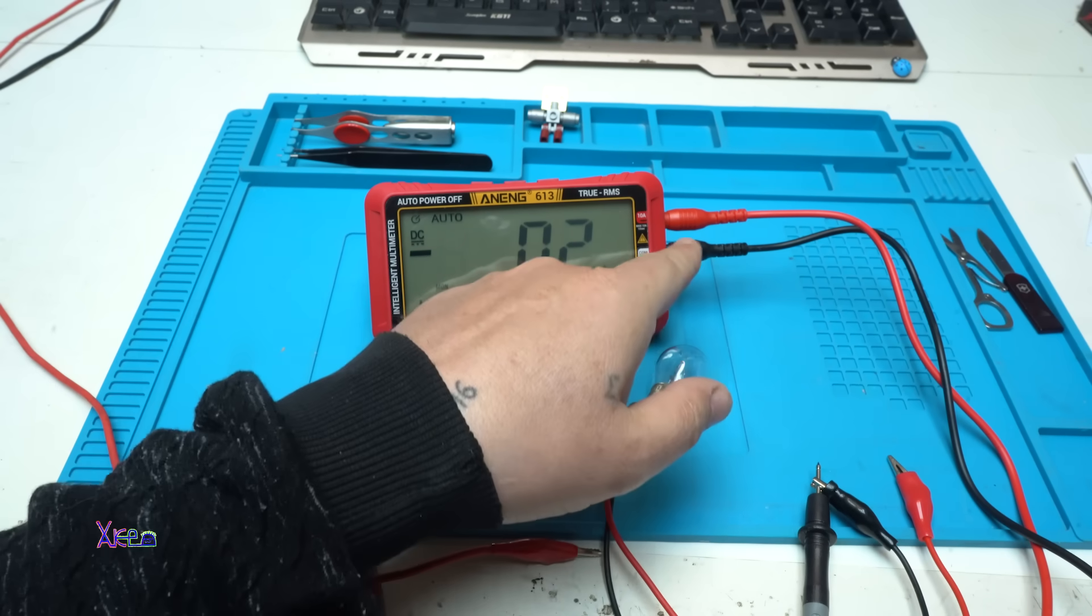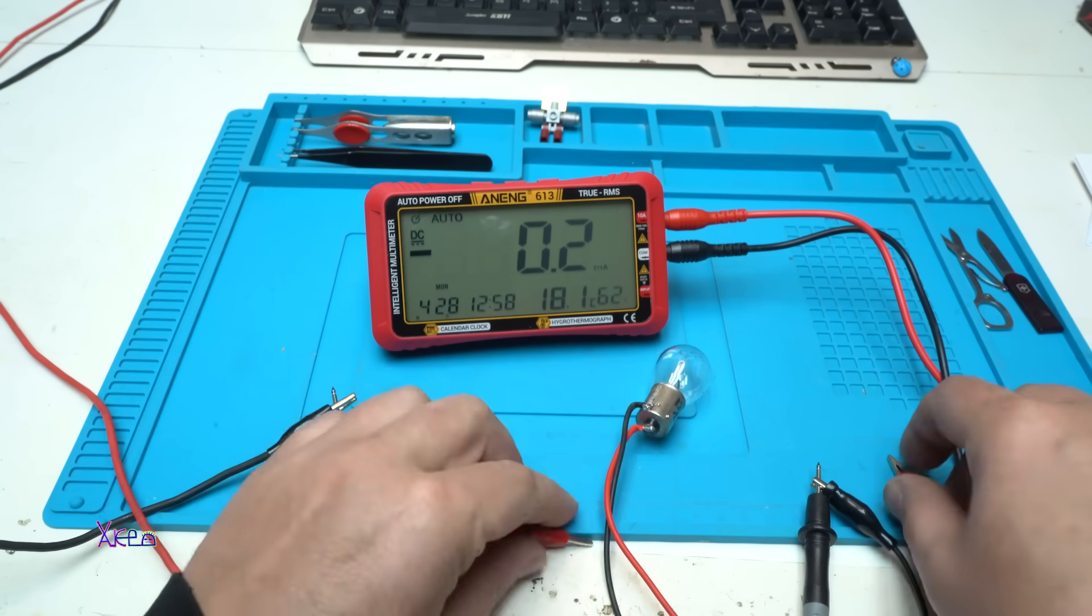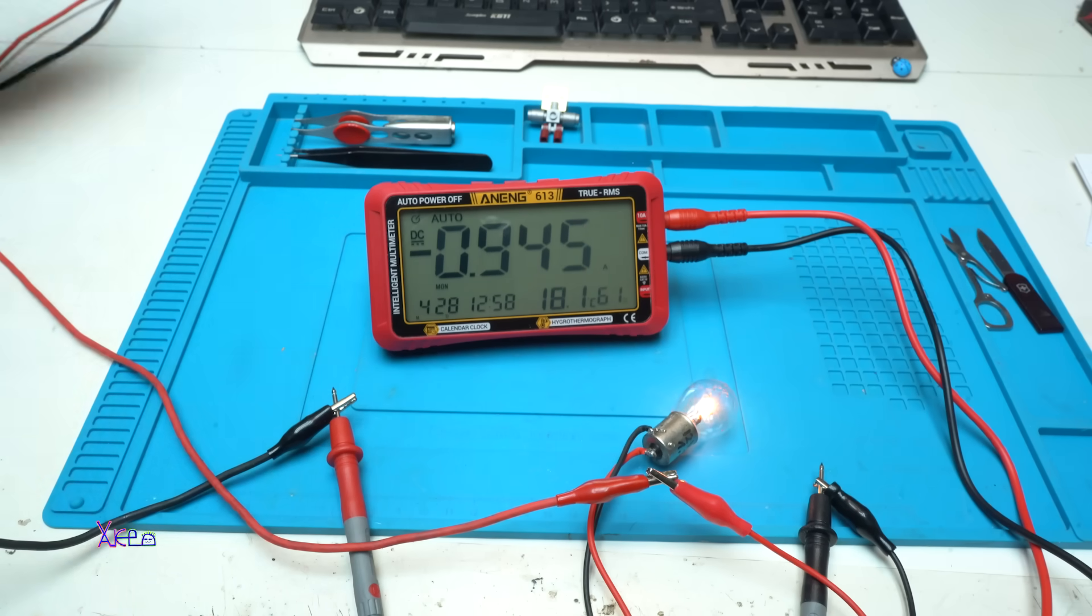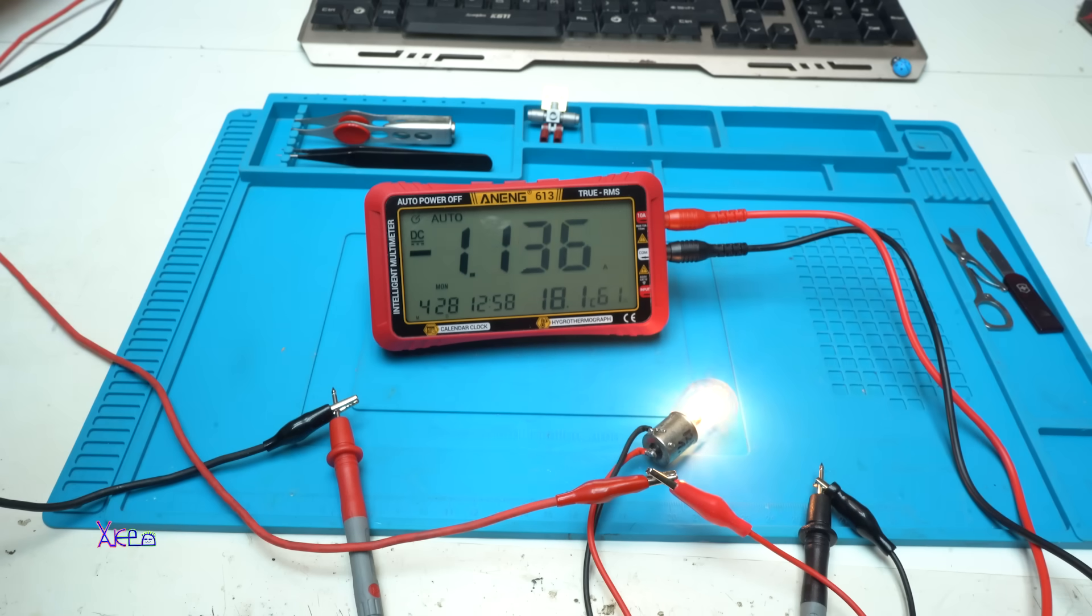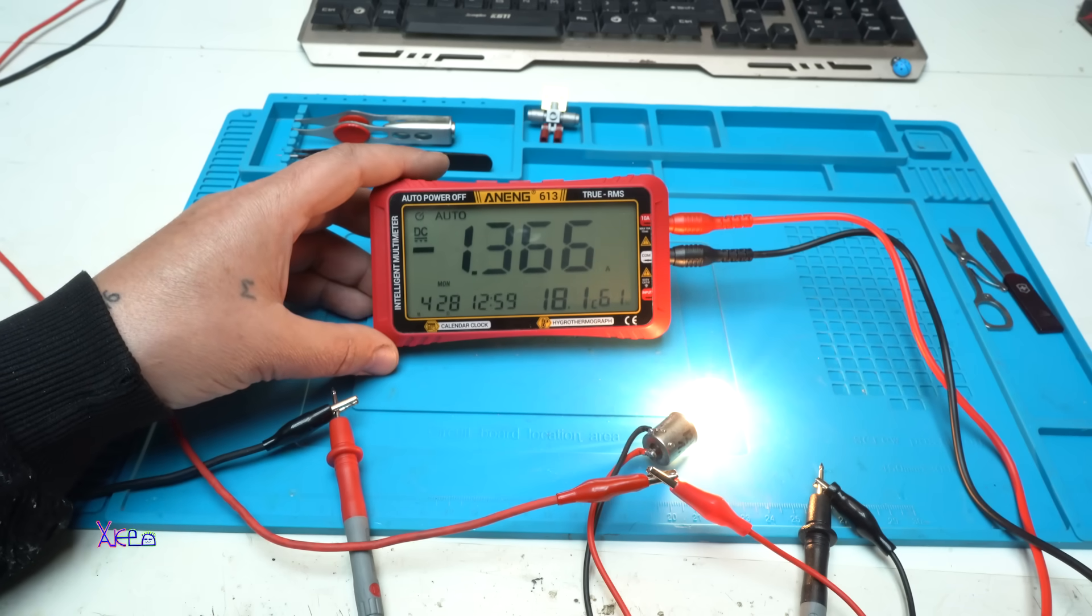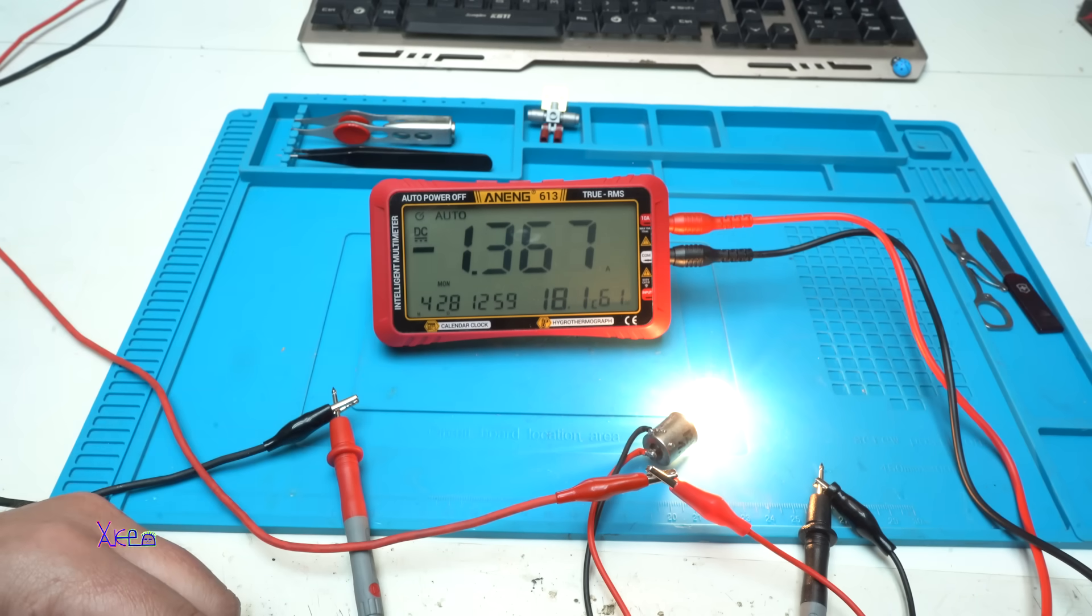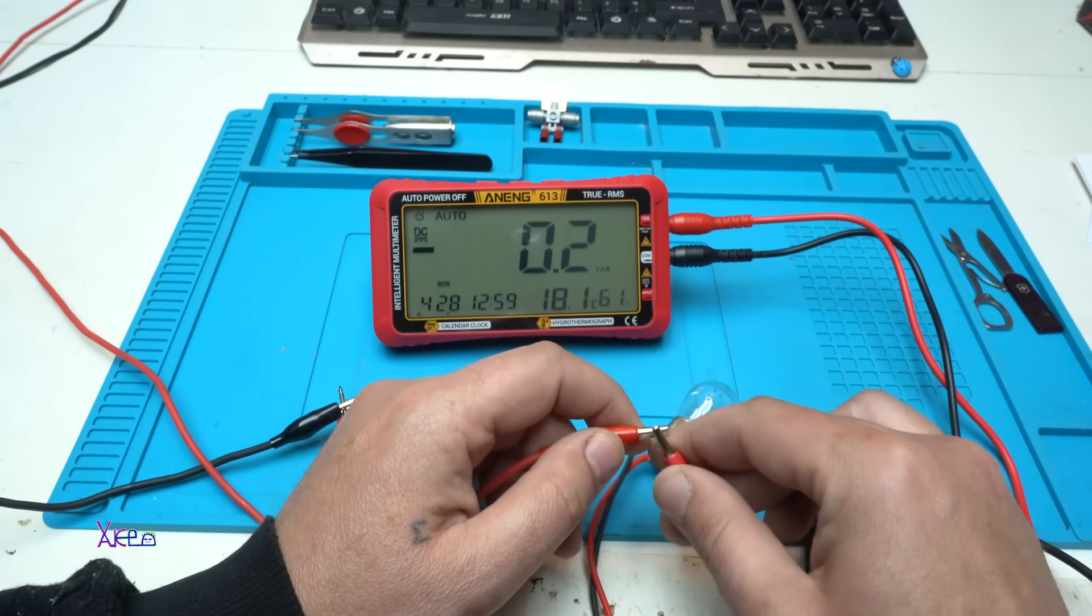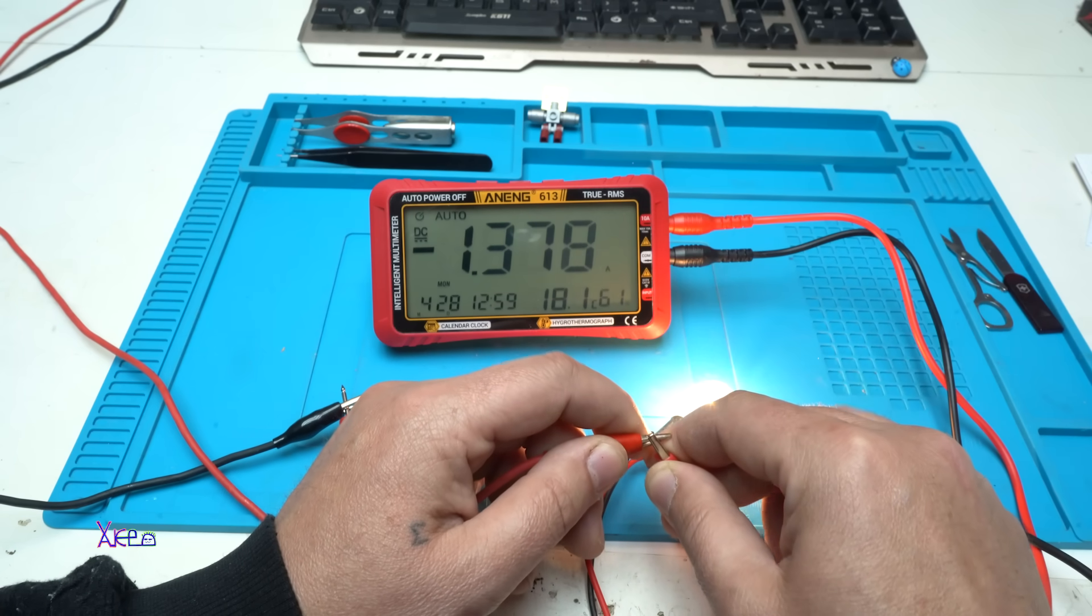Now set on amperes. The probe is on where it says 10 amperes. Connecting the bulb. Right now I'm sending 5 volts and it's pulling 0.9 amperes. Let's increase the voltage little bit to 10 volts maybe. And it's pulling 1.35 amperes. Works great. Also it's horizontal. 1.38 amperes. Great.